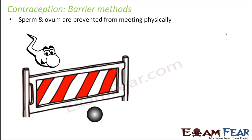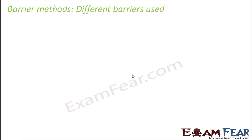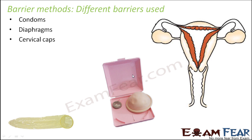Now, what can these barriers be, and where do we place them? There are many different types of objects used as barriers. Some common examples are condoms, diaphragms, cervical caps, and vaults. These are some of the common devices which are used as barriers.